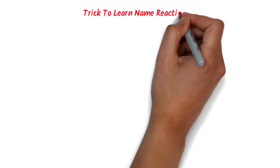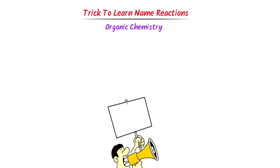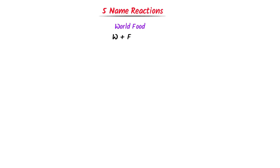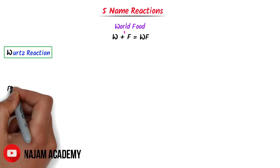Trick to learn name reactions and organic chemistry. I will teach you my personal trick to learn 20 name reactions and organic chemistry in a very short time. I write 'WF' — W plus F. This W stands for Wurtz reaction, this F stands for Fittig reaction, and this WF stands for Wurtz-Fittig reaction.